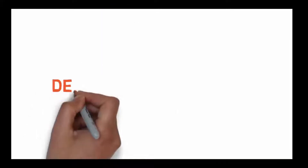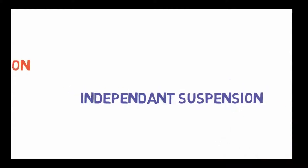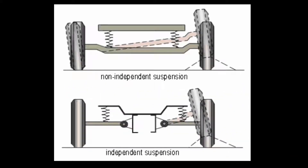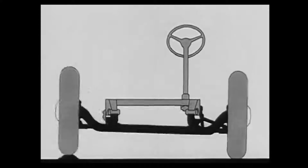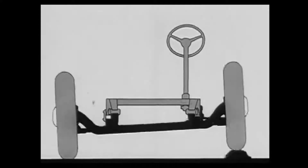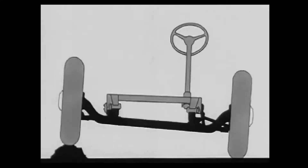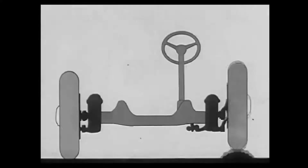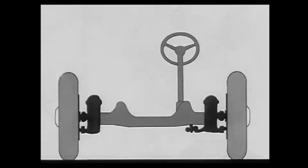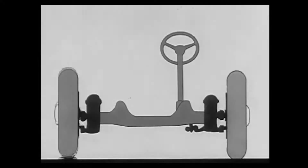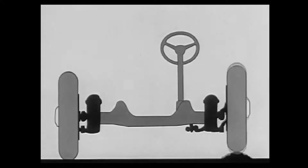A car suspension may be dependent or independent. In a dependent suspension, there is a rigid linkage between the two tires, so the force acting on one wheel will affect the other. An independent suspension system allows both wheels to move vertically up and down independently.